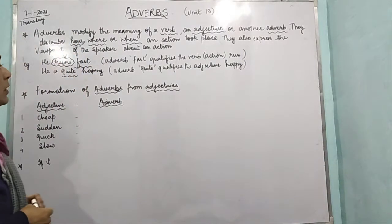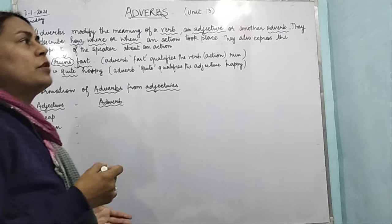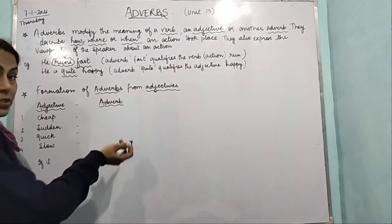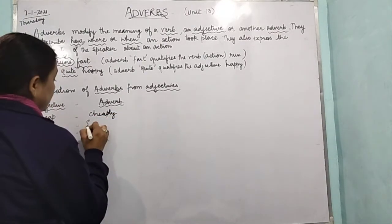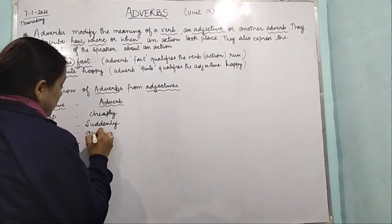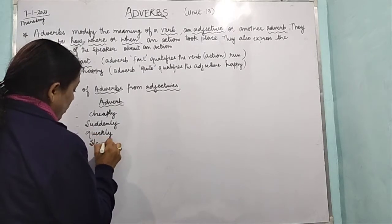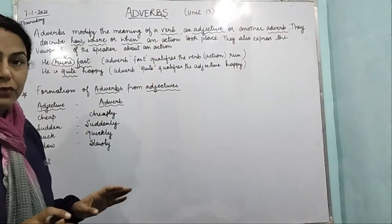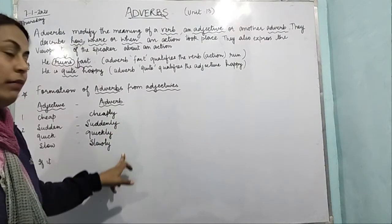Now we will discuss the formation of the adverbs from the adjectives. Mostly adverbs are formed by adding -ly. For example, cheap becomes cheaply, sudden becomes suddenly, quick becomes quickly, slow becomes slowly. These are the most simpler forms. If you have to change the adjective into an adverb, mostly 80% of adverbs are formed by adding -ly.